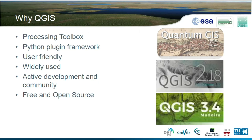QGIS also has this Python plugin framework, which allowed us to extend the functionality if it was not available already in QGIS. It is user friendly and widely used — we conducted many trainings in Africa and most of the users were already familiar with QGIS and used it before, so it's an environment they already know how to operate in. There's also an active development community, so the processing toolbox is becoming more robust and stable, and the user interface is becoming more user friendly. And last but not least, it's free and open source — if it wasn't, we would not be able to use QGIS in this project.